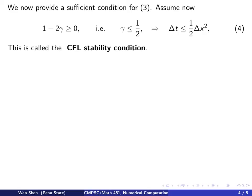So assume now we make the following assumption. We assume this number, 1 minus 2γ, is non-negative. Which means γ has to be less than half.